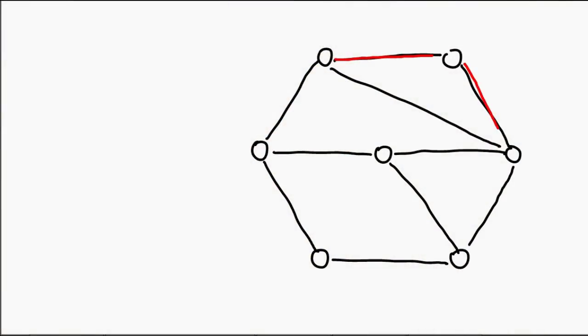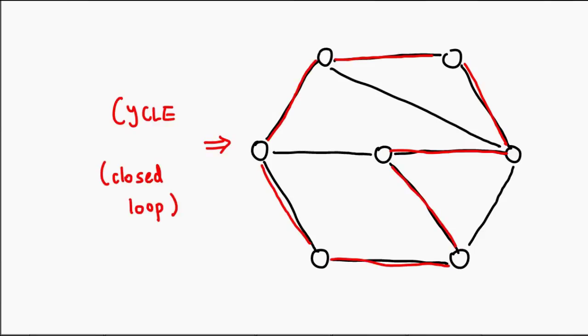We extend the concept of a path to a concept of a cycle. If our path starts and ends at the same vertex, what we get is a cycle — because it is a closed loop.